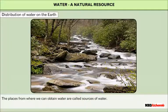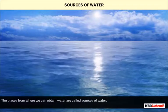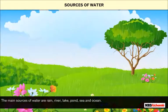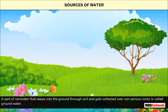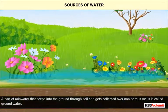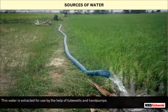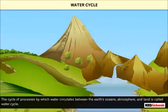This usable water is available in the form of underground water, lakes, tanks, rivers, and streams. The places from where we can obtain water are called sources of water. The main sources of water are rain, river, lake, pond, sea, and ocean. A part of rainwater that seeps into the ground through soil and gets collected over non-porous rocks is called groundwater. This water is extracted for use by the help of tube wells and hand pumps.